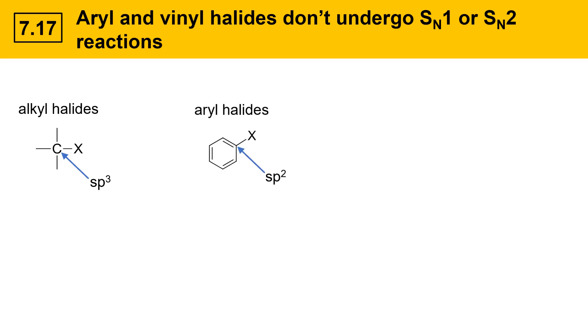Aryl halides have a halogen attached to an sp2 carbon, as do vinyl halides. These types of substrates don't behave the same way that alkyl halides do. The hybridization of the carbon makes a very large difference.